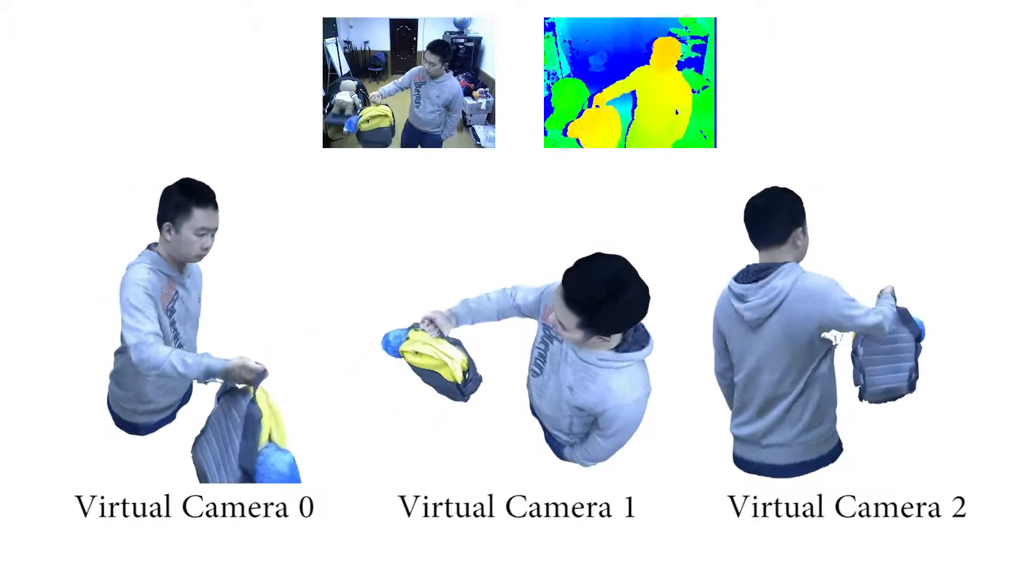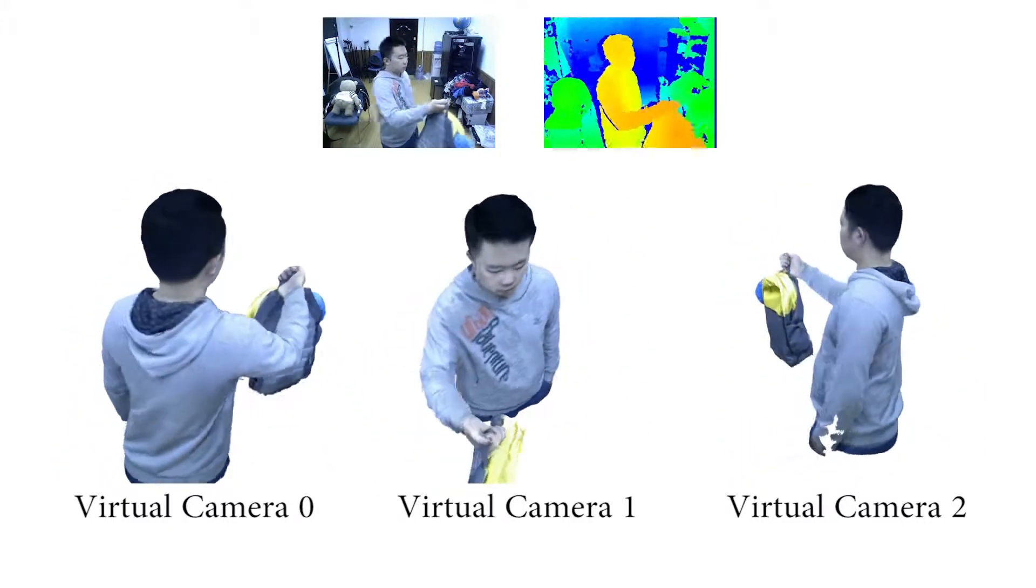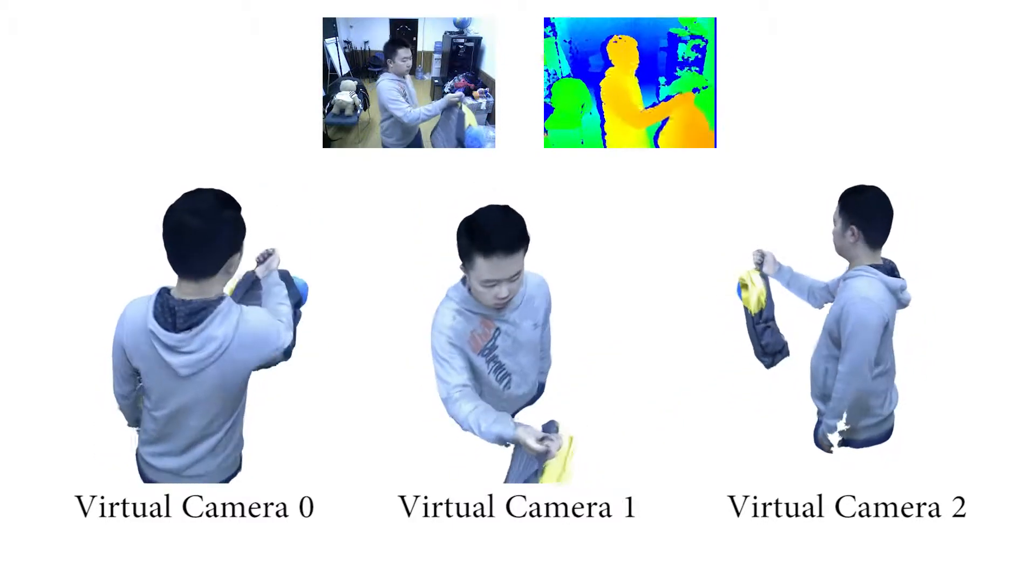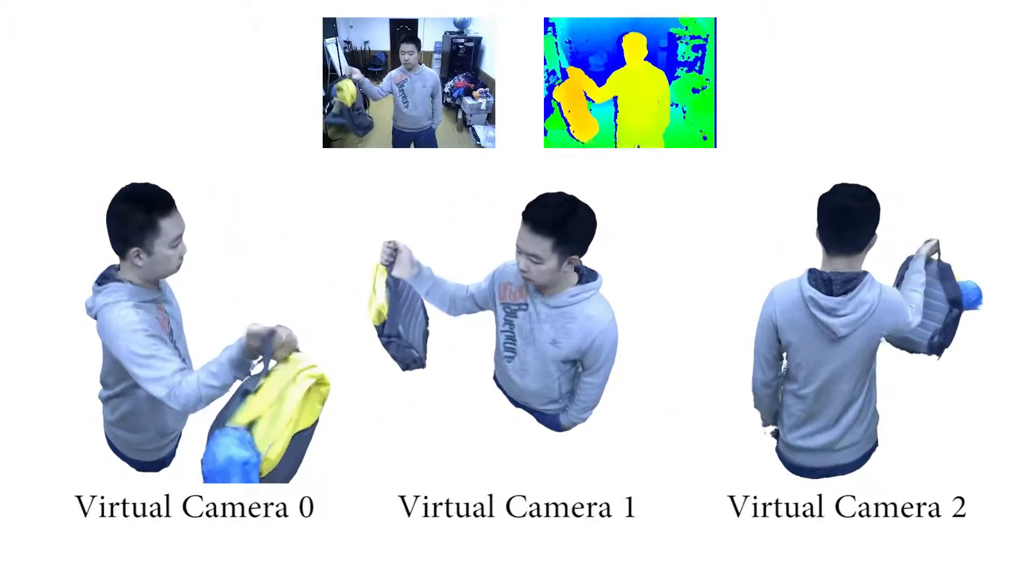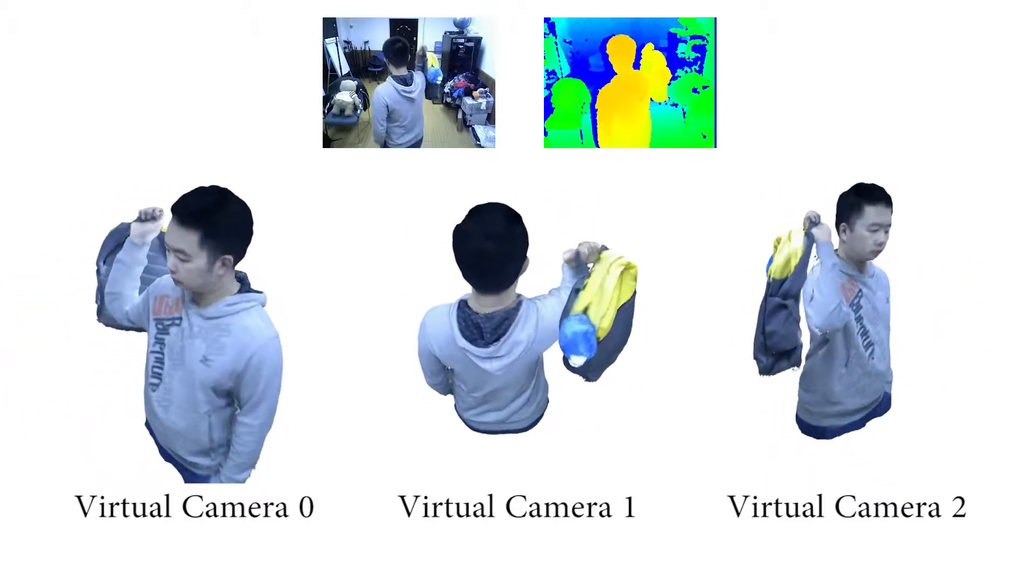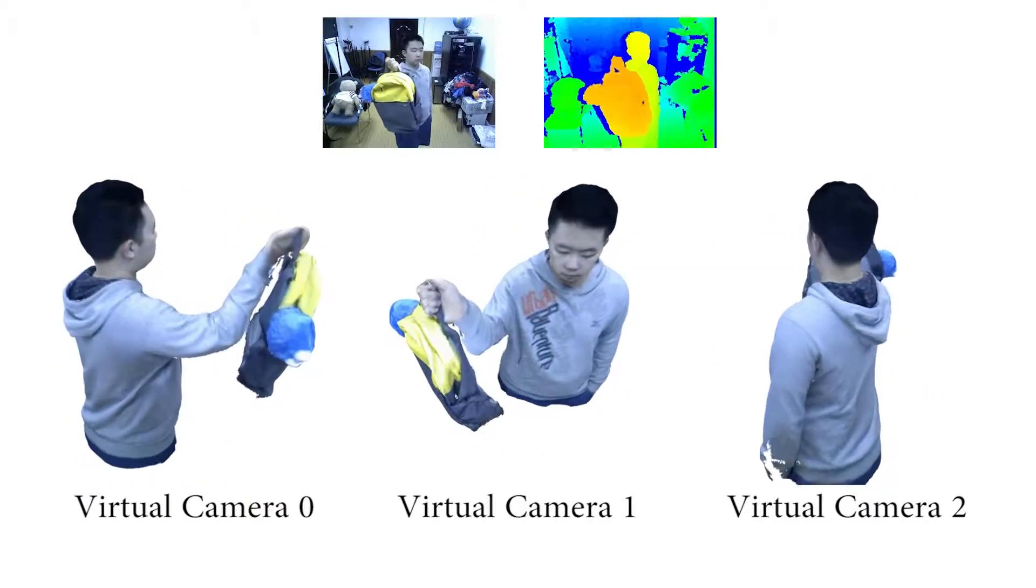After tracking the entire sequence, we use the final fused model for free viewpoint video synthesis using our proposed back reconstruction technique. Here we render free viewpoint videos from the viewpoint of three virtual cameras. Without our albedo fusion technique, it is impossible to enable such an application using a single RGBD camera.